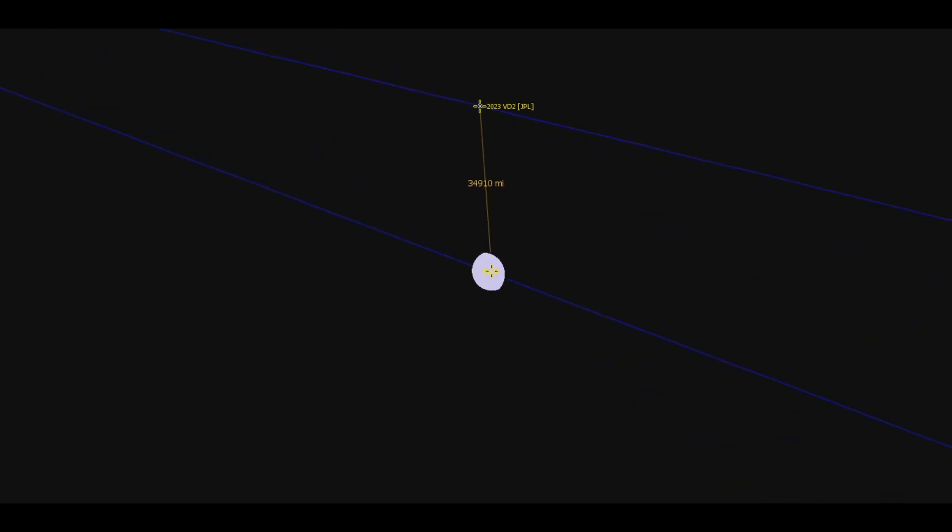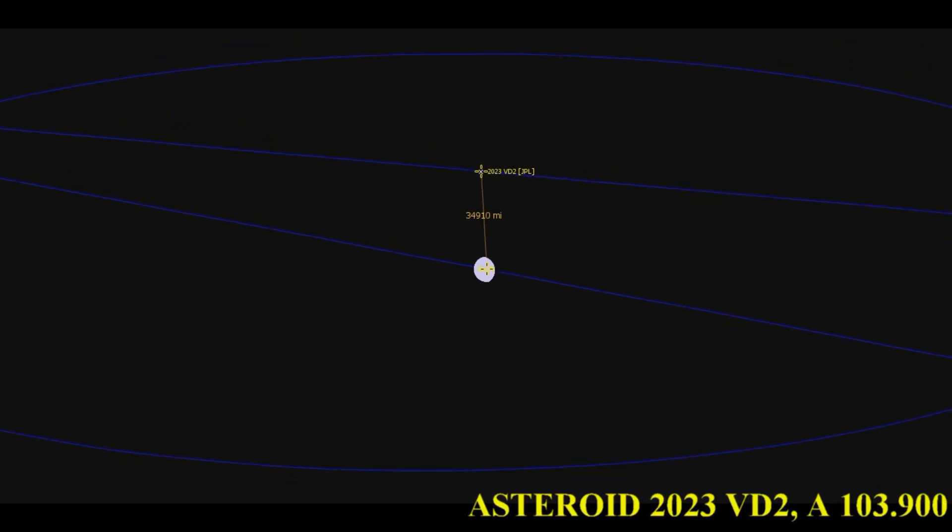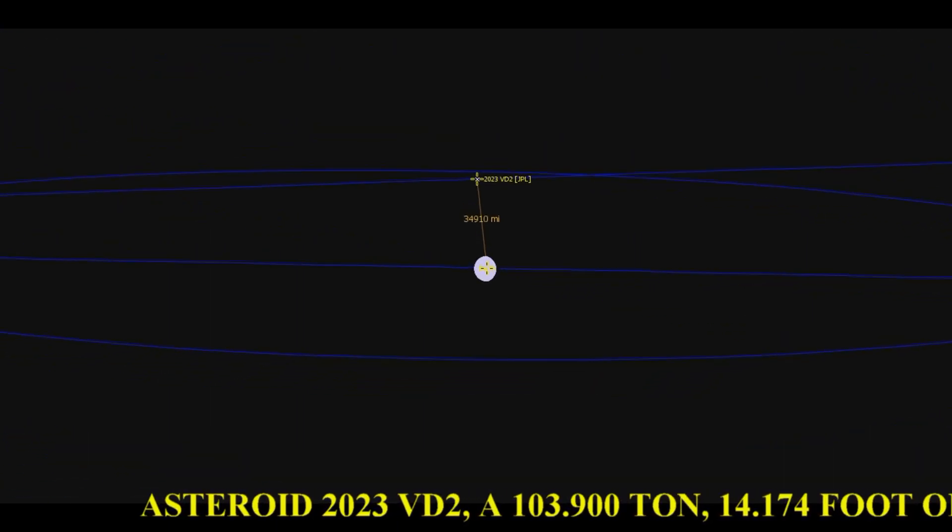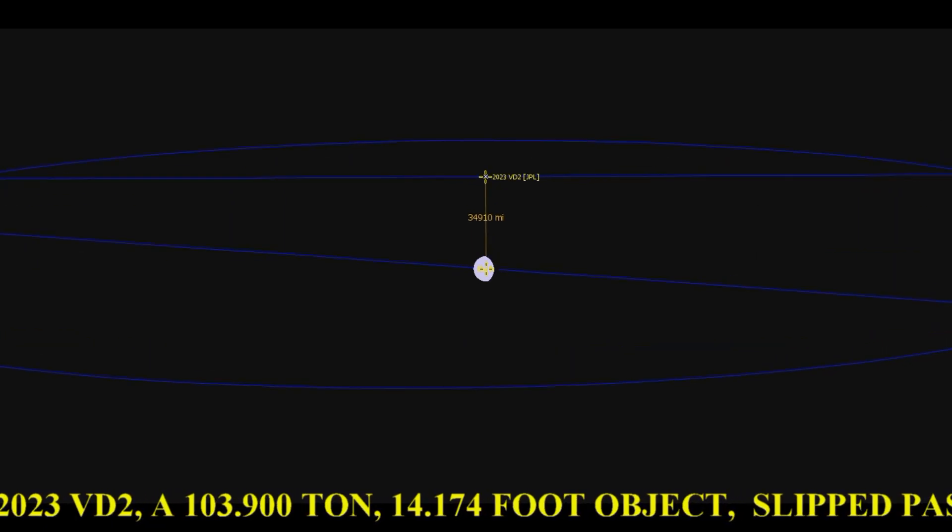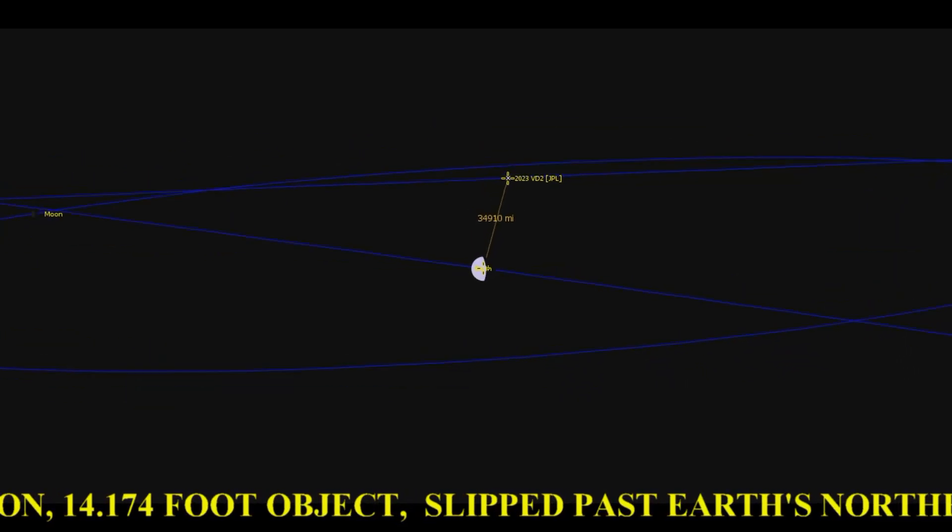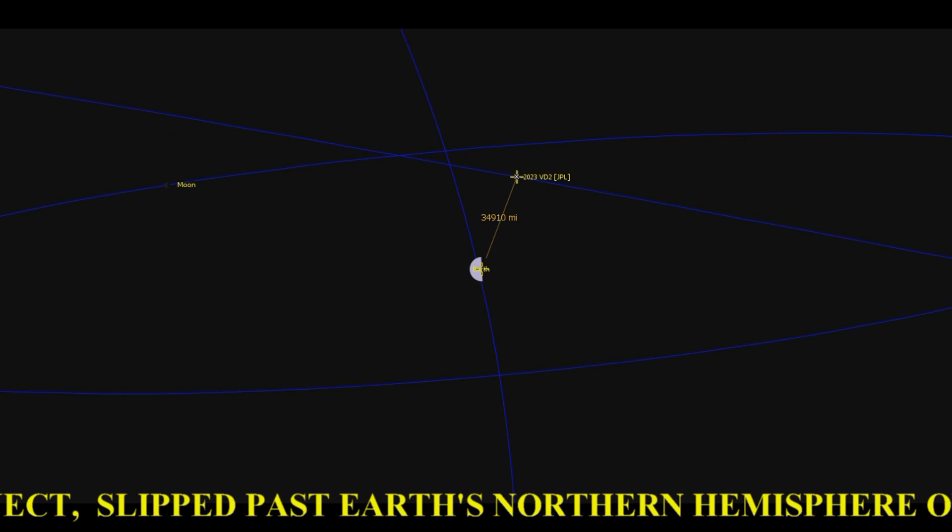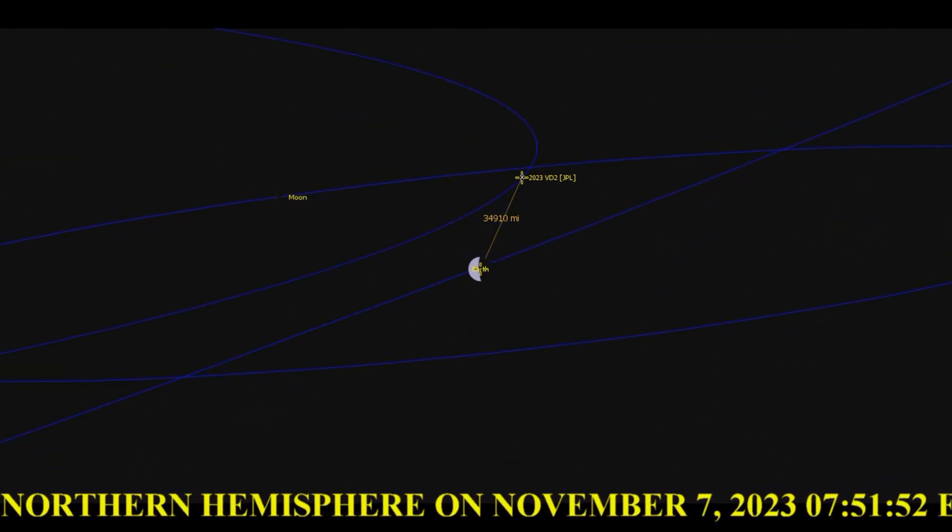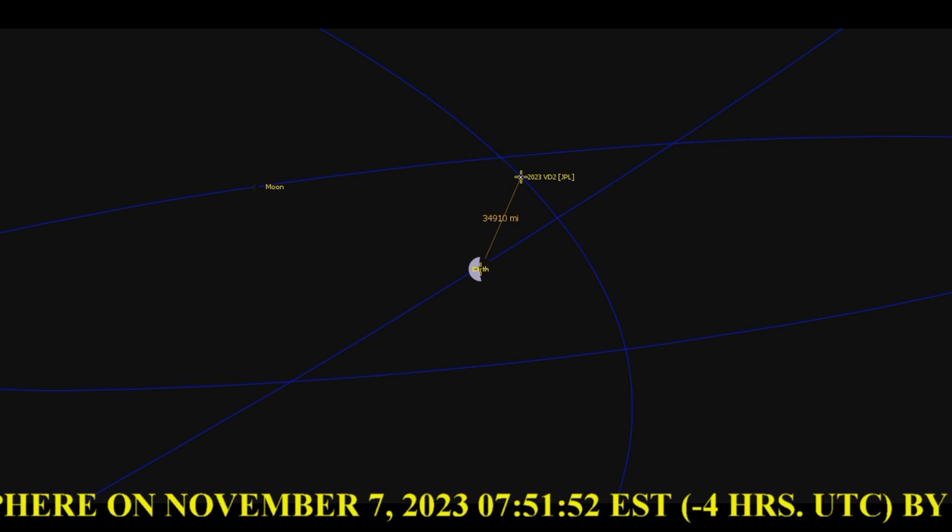Asteroid 2023 VD2, a 103,900-ton, 14,174-foot object, approximately calculated based on a solution date of November 7, 2023, yielding 24 observations taken on November 6, 2023.